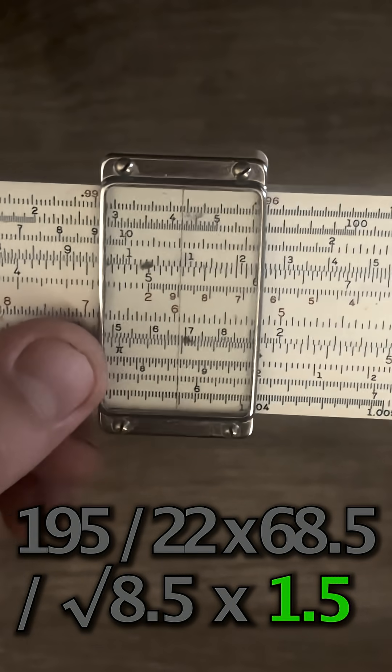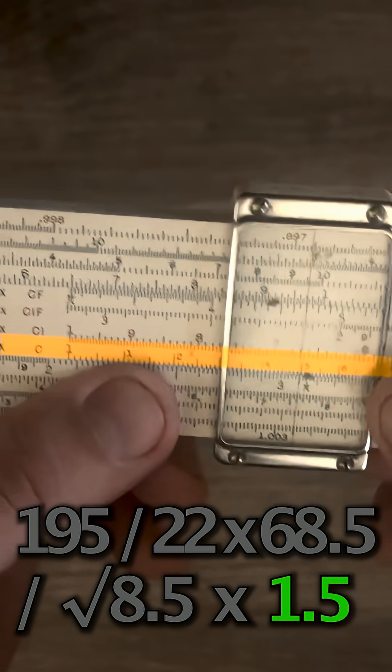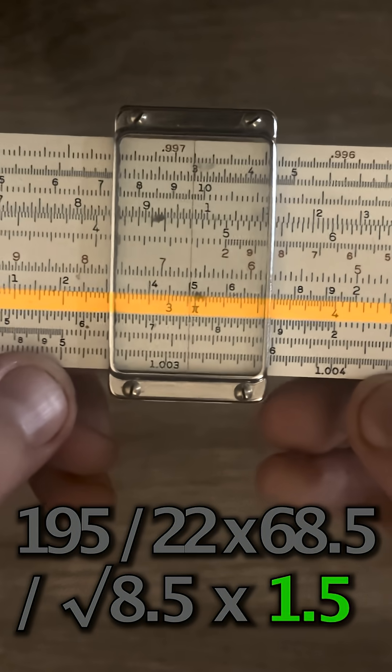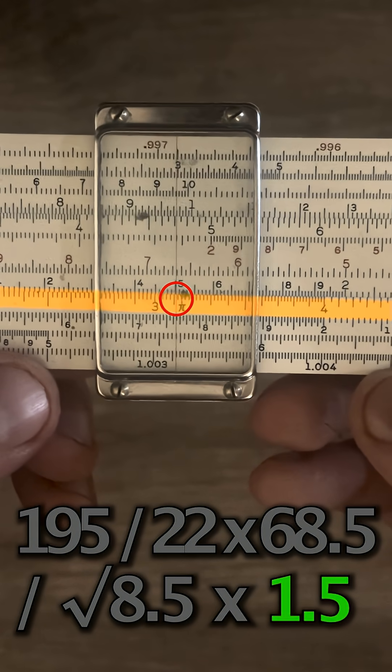And our last number is 1.5. We're going to multiply. So I'll slide on the c scale to 1.5 right there. And down below it on d, we get 312 roughly.